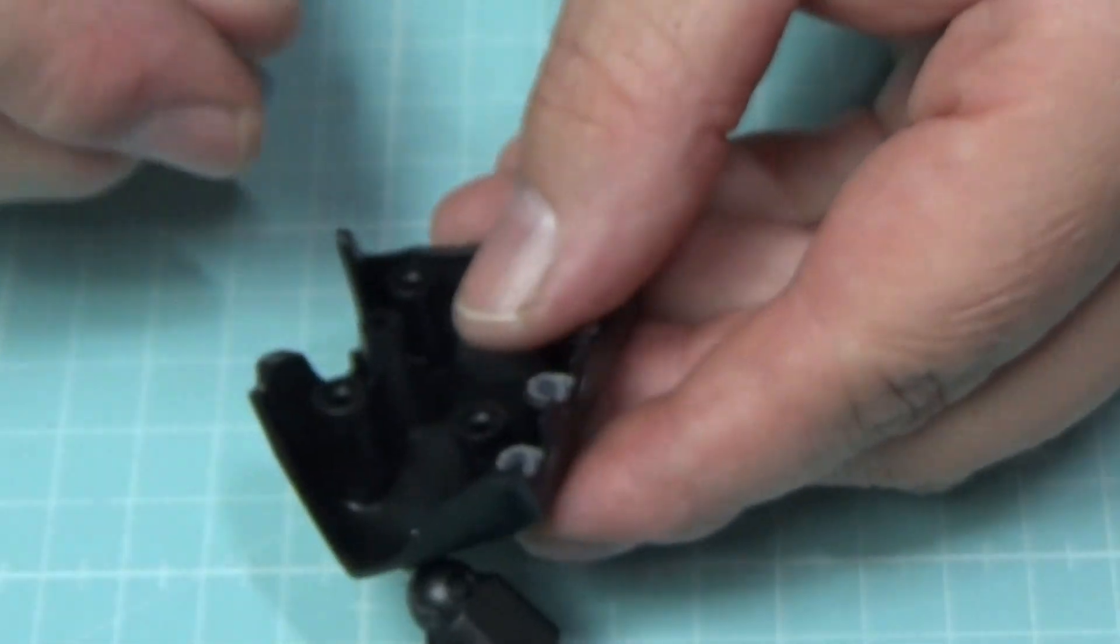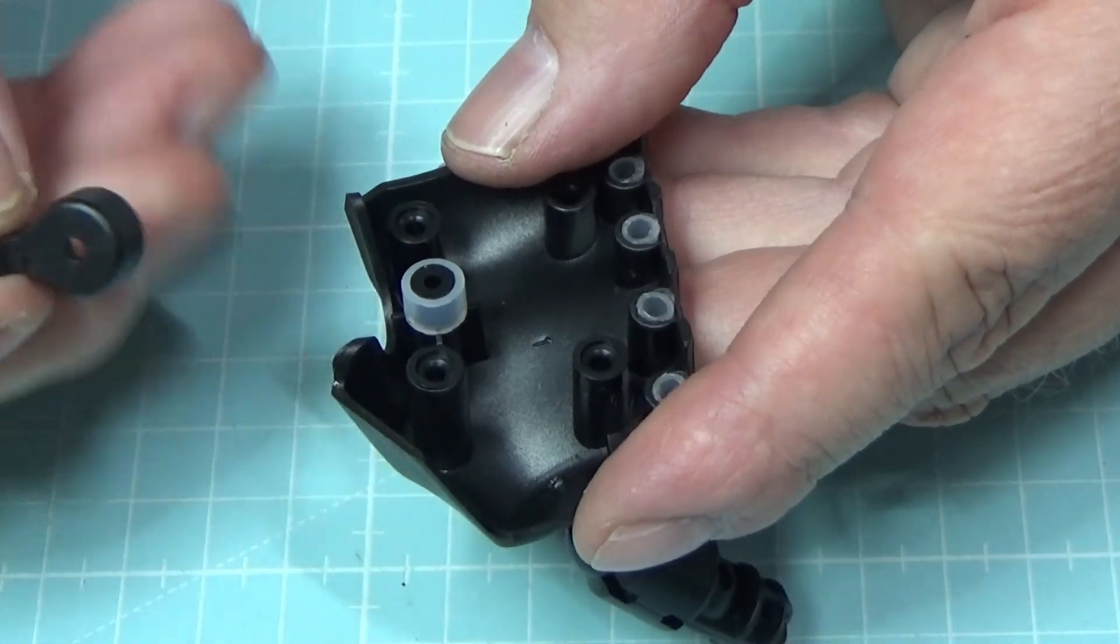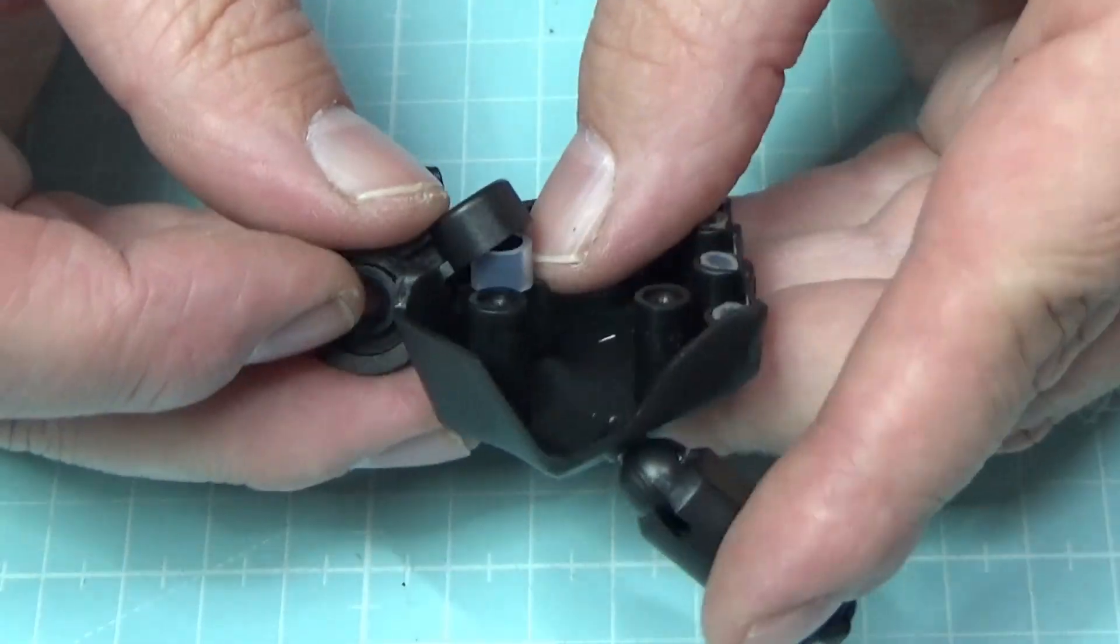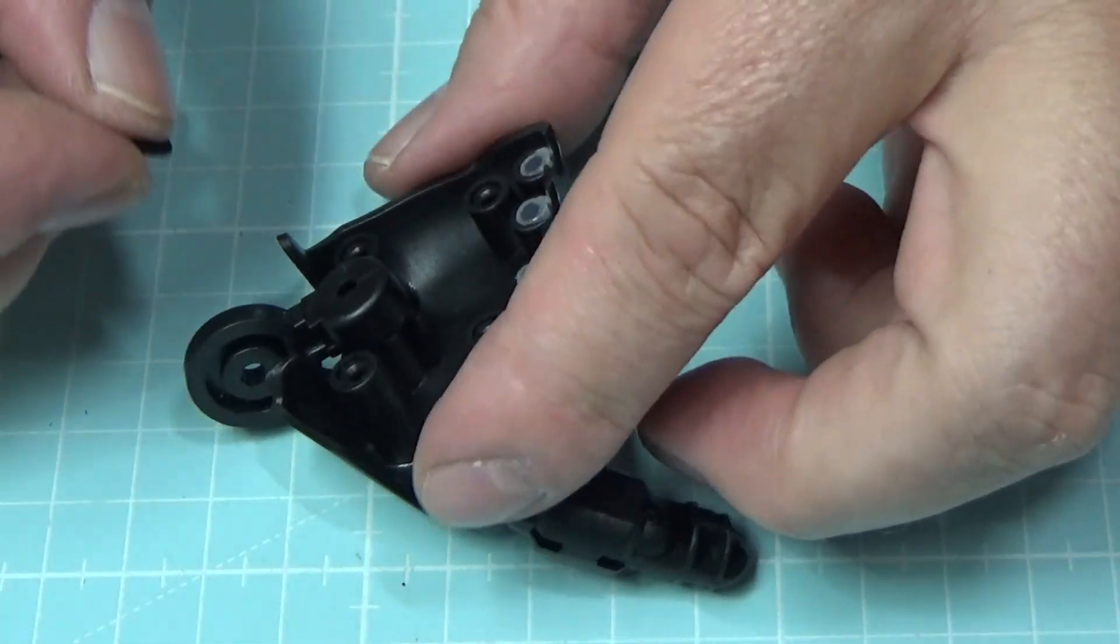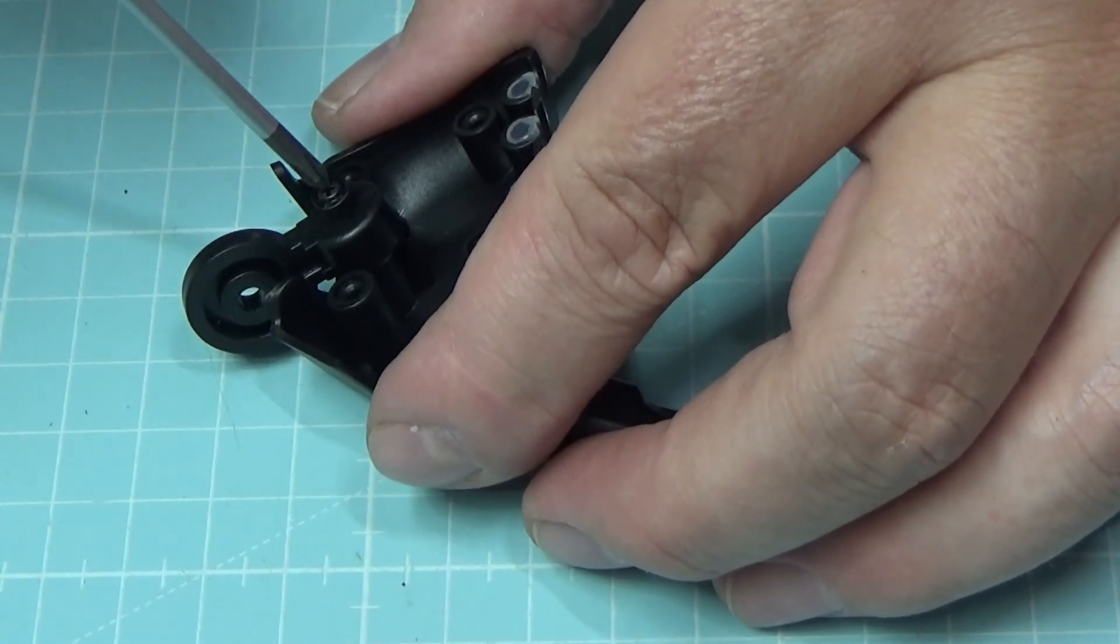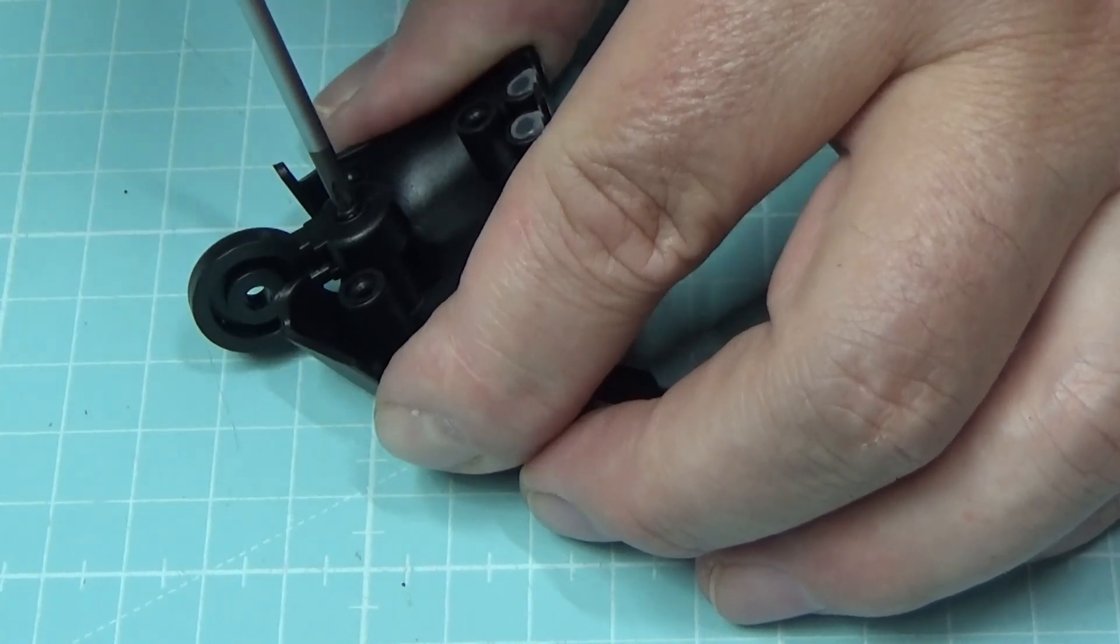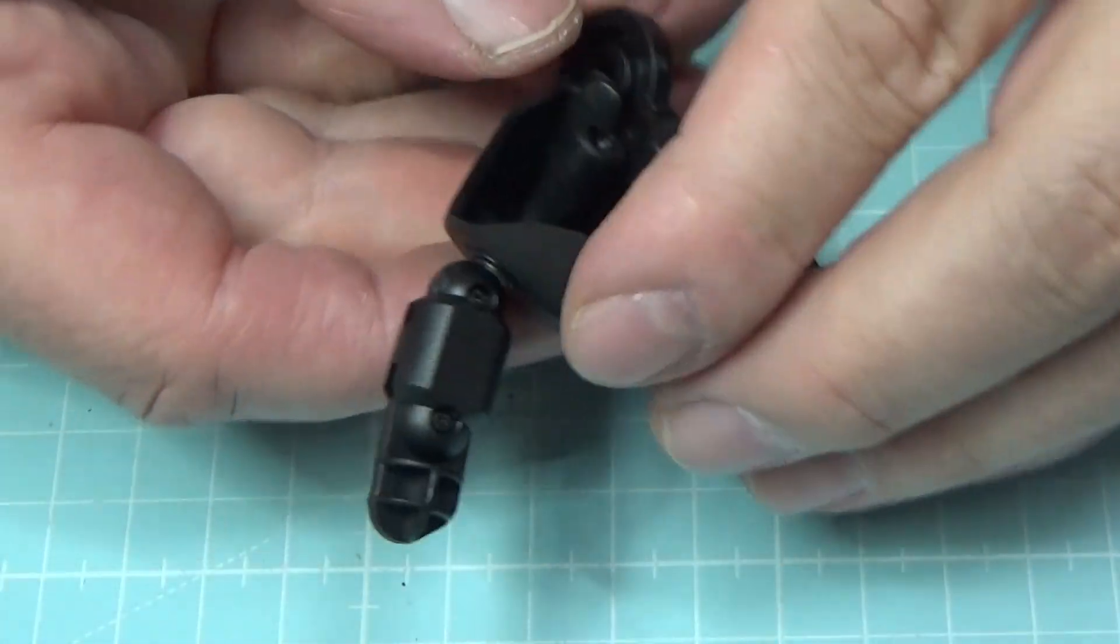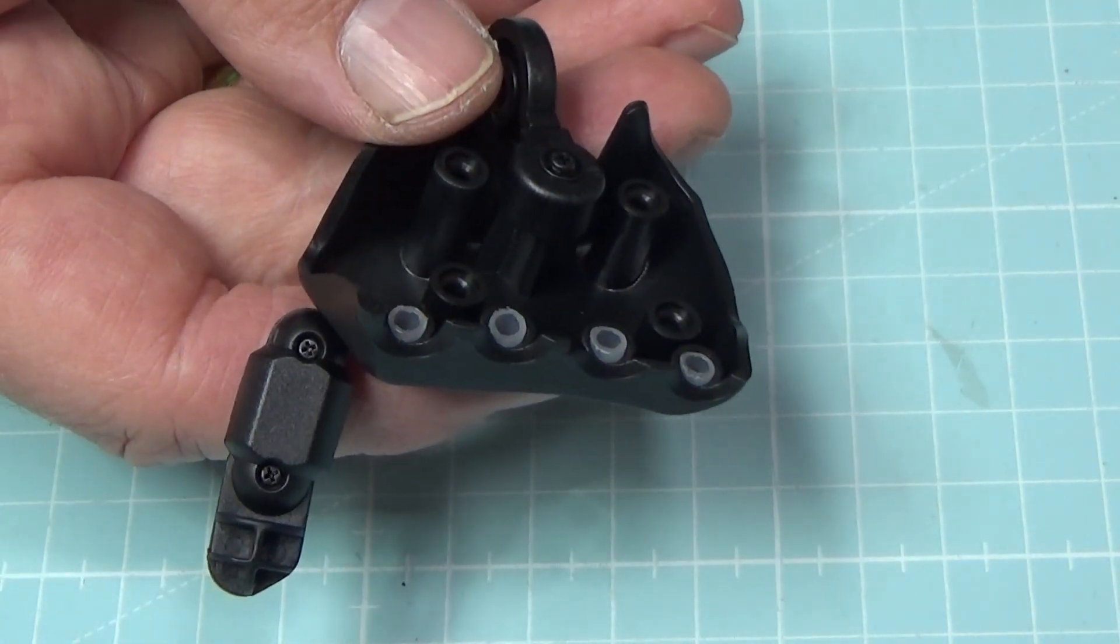Und ja, ist trotzdem fest. Und das ist ja wichtig. Ob das jetzt so richtig rum ist? Ja, sieht glaube ich so aus. Aber das sehen wir nachher, wenn wir die anderen Fingers dran haben. Dann kommt hier ein dicker Ring rüber. Dieser hier, dieser dicke Ring. Und hier kommt der dann oben rüber. Hier ist dann nachher die Verbindung zum Arm.